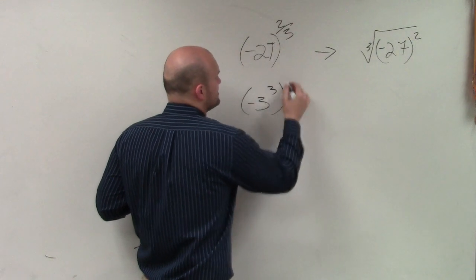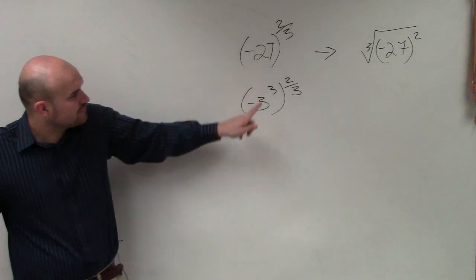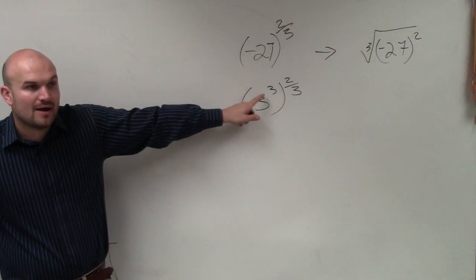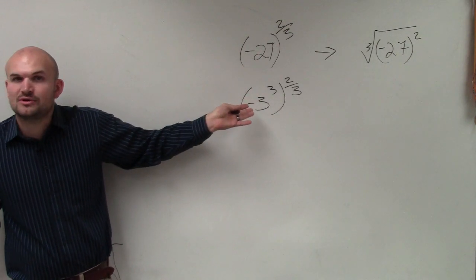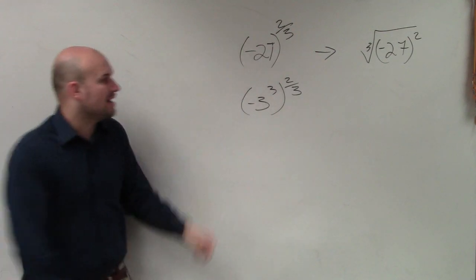Negative 3 to the third power times the 2 thirds. Why it's so nice to rewrite negative 27 as negative 3 to the third power, because what happens with the rules of exponents when you have a power raised to another power, you do what? Multiply.